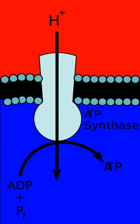According to the chemiosmotic coupling hypothesis, proposed by Nobel Prize in Chemistry winner Peter D. Mitchell, the electron transport chain and oxidative phosphorylation are coupled by a proton gradient across the inner mitochondrial membrane. The efflux of protons from the mitochondrial matrix creates an electrochemical gradient, which is used by the FoF1 ATP synthase complex to make ATP via oxidative phosphorylation. ATP synthase is sometimes described as Complex V of the electron transport chain. The Fo component of ATP synthase acts as an ion channel that provides for a proton flux back into the mitochondrial matrix, and is composed of A, B, and C subunits.